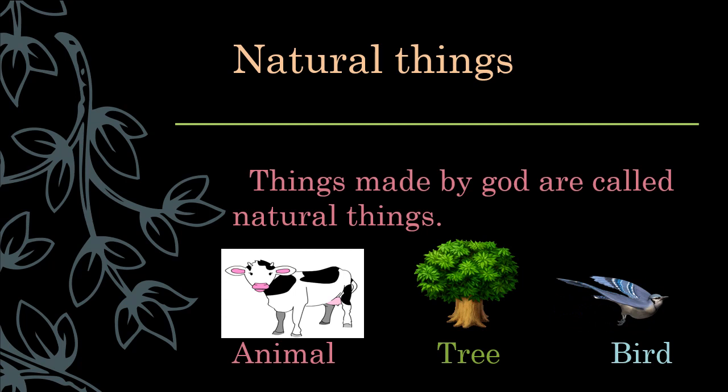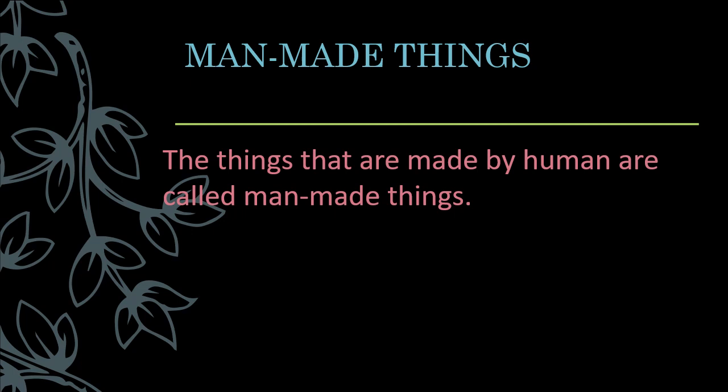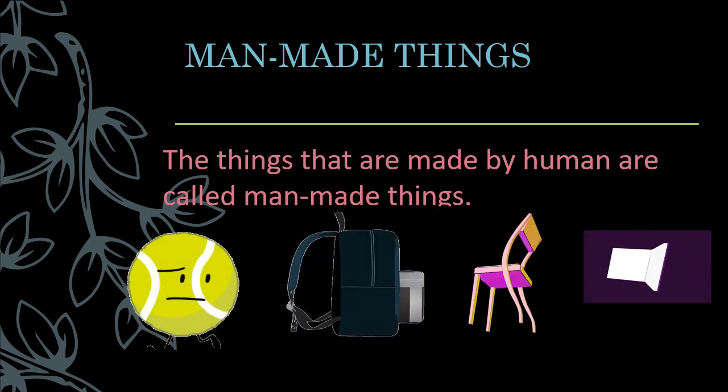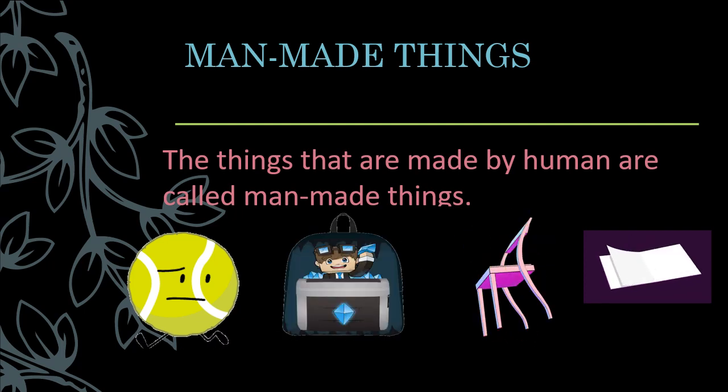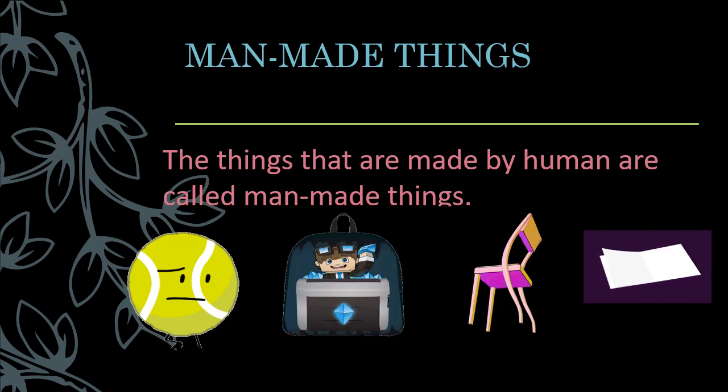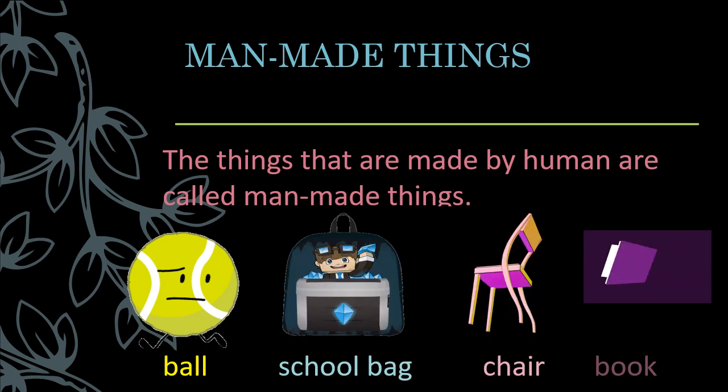Animal, tree, bird. Man-made things. The things that are made by human are called man-made things. The below given pictures are some man-made things. You find them in your school and house. Ball, school bag, chair, book.